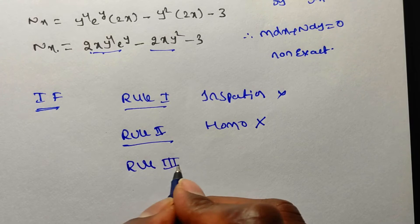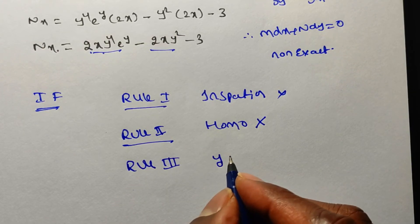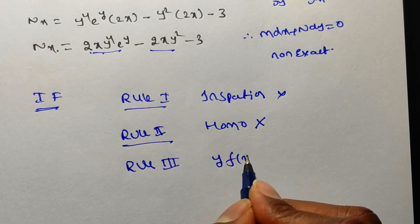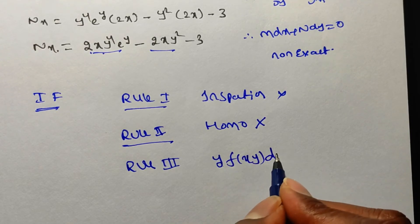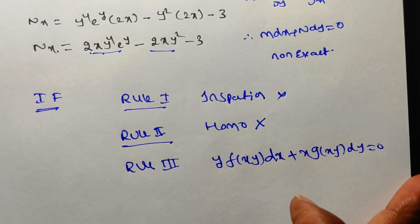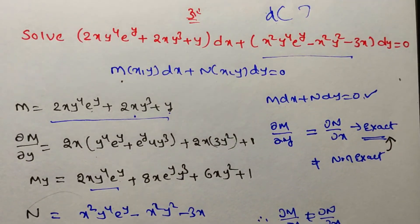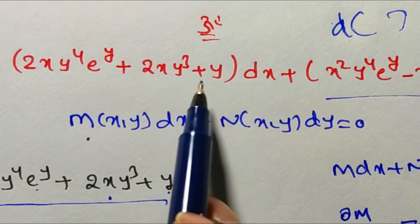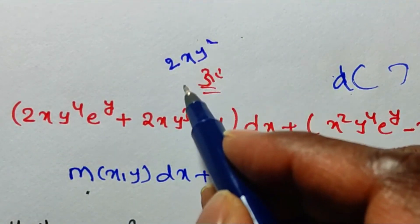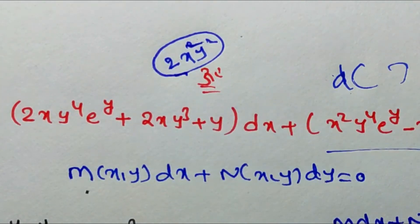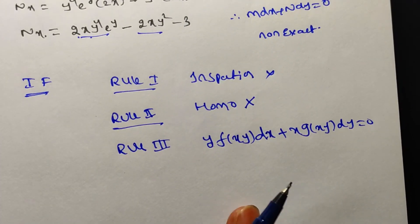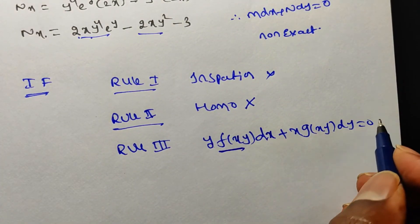We go to Rule 3: the equation should be in the form f(xy)·y dx + x·g(xy) dy = 0. Taking y common from the dx coefficient, we get 2xy² (not 2x²y²), which does not match the required form. So Rule 3 does not apply.